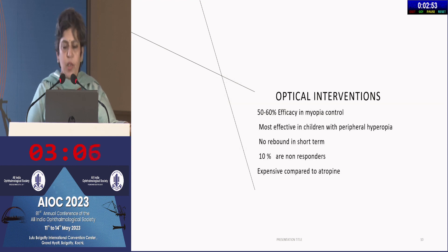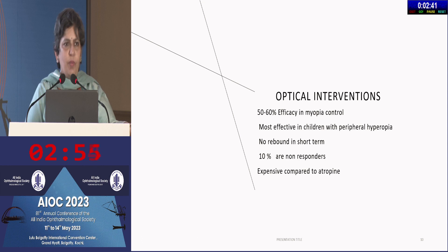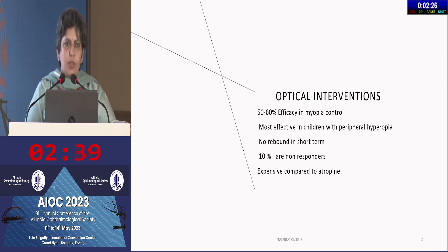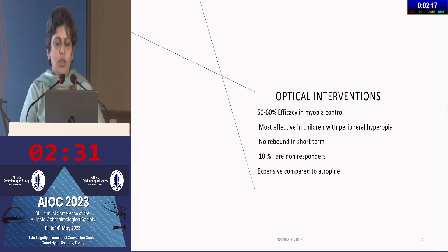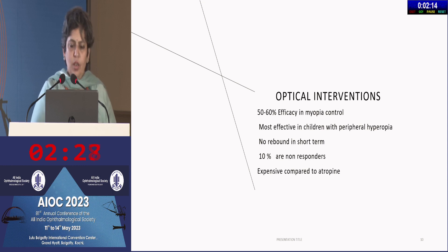Most of these optical interventions report efficacies between 50 to 60%. They are most effective in children who have relative peripheral hyperopia — which is why peripheral refraction is important, as these interventions may not be effective in children without peripheral hyperopia. We have six-year data and some rebound data available; so far no major rebound has been noted. However, 10 to 15% of children are likely to be non-responders. A downside is that all these optical interventions are fairly expensive compared to, say, low-dose atropine.